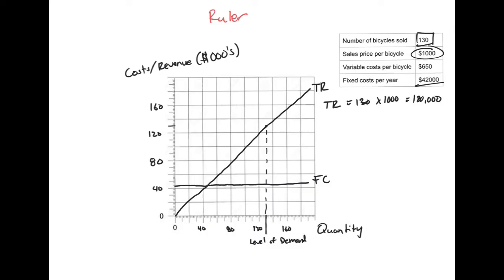Next, we need to figure out our total costs. Our total costs when we sell zero products is going to be where the fixed costs are. However, we now need to say, what will our total cost be if we sell the 130? To calculate my total cost, I need to recognize what I have for my variable and my fixed costs. So my total cost is going to equal my 130 bikes times $650 plus my fixed costs of $42,000. So now I know that my total costs equal 126,500.